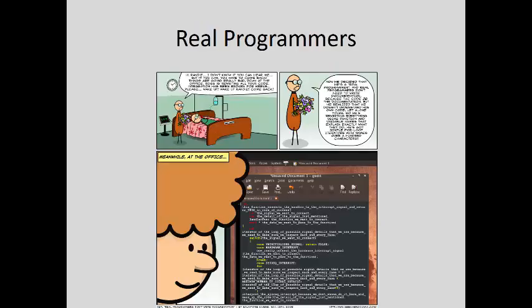We'll start with a little motivation entitled 'Real Programmers.' The message reads: 'Hi Randy, I don't know if you can hear me, but if you can, you have to come back. Things are going real bad down at the office. Ross is rewriting all your code. Integration has been broken for weeks. Please wake up Randy, come back.' He's decided he's a real programmer and real programmers don't need documentation because the code is the documentation. But he realized he doesn't understand his own code, let alone yours. He's rewriting everything using function and variable names to explain exactly what they do — simple for loop iterators with names over 100 characters, as you can see in the code on screen.